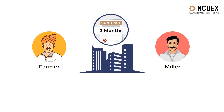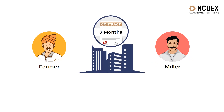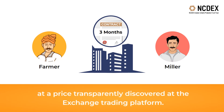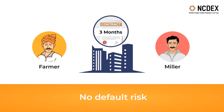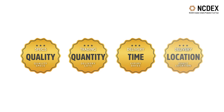In Scenario 2, the farmer and the Miller individually register as clients of trading members of an exchange. The Miller buys a three-month chana futures contract and the farmer sells a three-month chana futures contract at a price transparently discovered on the exchange trading platform. As both the farmer and the Miller pay clearing house-stipulated margins, there is virtually no default risk, as the clearing house becomes counterparty to all trades executed on the exchange platform.